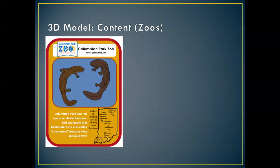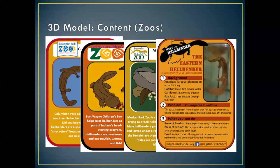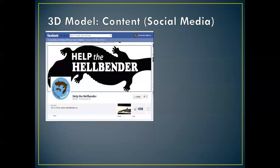We also created trading cards with our four Indiana zoos: Columbian Park Zoo, Fort Wayne Children's Zoo, Mesker Park Zoo, and Indianapolis Zoo. People can pick up and collect these cards at the various zoos — the front talks about natural history and what people can do to help Hellbenders, and the back tells what that particular zoo is doing with Hellbender conservation. We also have a social media platform — I really encourage everyone to drop a like on Help the Hellbender on Facebook. We've got about 5,000 followers and I'd love our students to be part of that audience. If you send me a screenshot of that too, you might be rewarded as well.